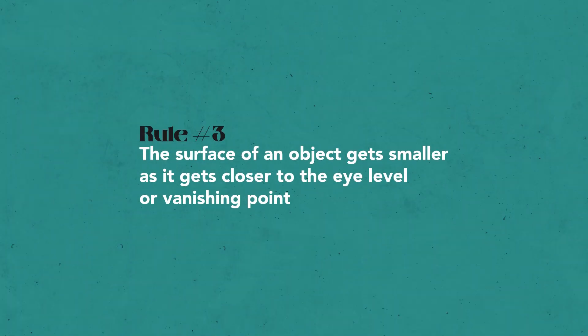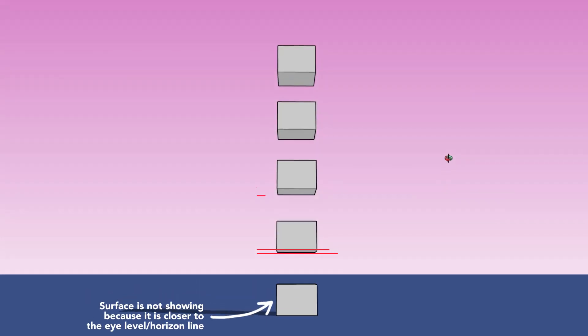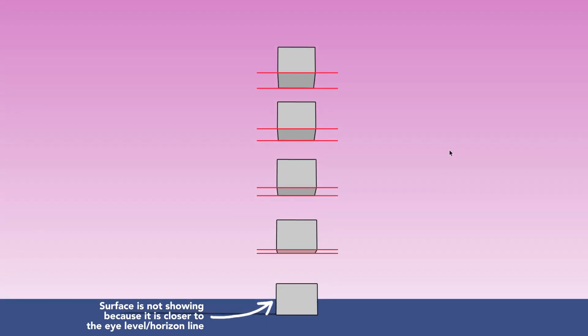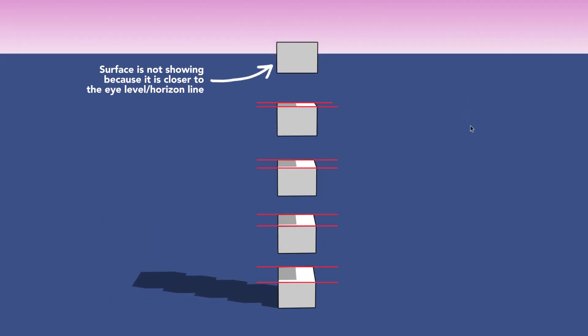The third and final rule when using perspective is this: the surface of an object gets smaller as it gets closer to the eye level or vanishing point. Here I have a box sitting on the ground, and I'm going to duplicate this and move the copy upward. As we can see, as the box moves closer to the eye level, the more smaller its surface gets. The box in the middle doesn't show any top or bottom surface since it is the most closest to the eye level. Even if I lower the position of the eye level, this rule still applies. And of course, even if I move the eye level higher, the same thing happens. The top or bottom surface of an object gets smaller as it gets closer to the eye level.